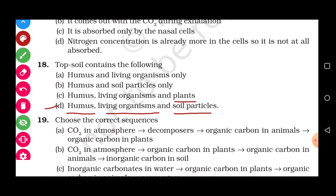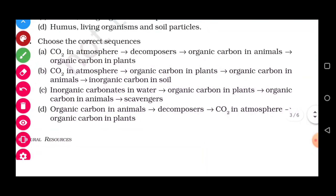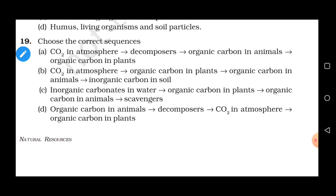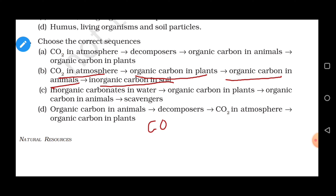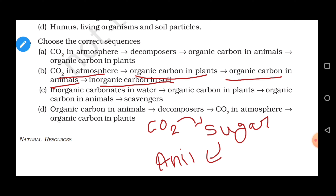Question 19: Choose the correct sequence of the carbon cycle. CO₂ is present in the atmosphere; plants fix this CO₂ by photosynthesis and convert it into organic carbon in the form of sugars and carbohydrates; this then goes into the body of animals; and after the death of animals, the carbon goes into the soil. So the correct sequence is: atmospheric CO₂ → plants (photosynthesis) → animals → soil. Correct answer is option B.